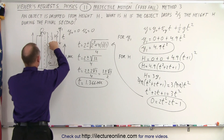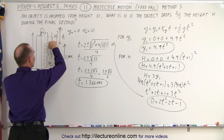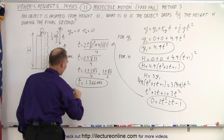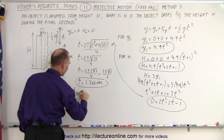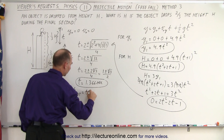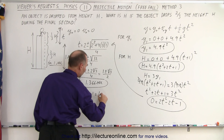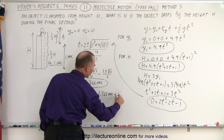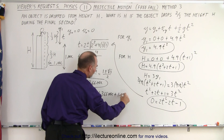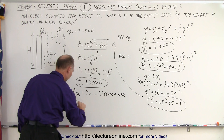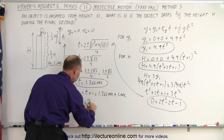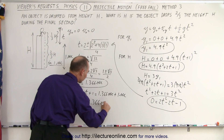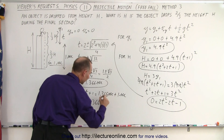So t equals 1.366 seconds is the time to reach the position where the object has one second left to fall. The total time is t plus one second, which equals 1.366 plus 1, giving a total time of 2.366 seconds.